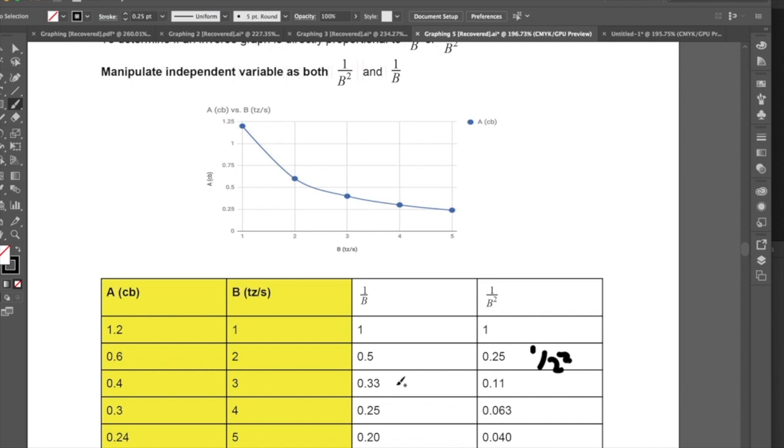So if b is 3, 1 over 3 is 0.33. If b is 4, 1 over b is 0.25. And then 1 over 4 squared, et cetera, et cetera, et cetera.